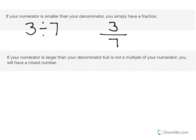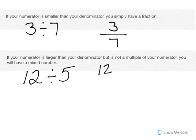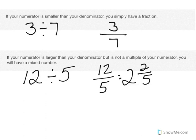If my numerator is larger than my denominator but is not a multiple of the denominator, you will have a mixed number. For instance, if I have 12 candy bars that I want to divide amongst 5 people, I'm going to do 12 divided by 5. 12 is my numerator and 5 is my denominator. 12 is larger than 5, however 12 is not a multiple of 5 — therefore I know I'm going to have a mixed number. Each person gets a whole number of candy bars plus a fractional part. In this case, that would be 2 and 2 fifths candy bars.